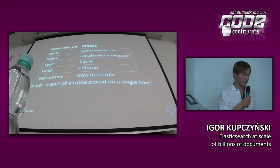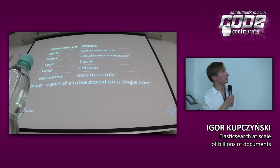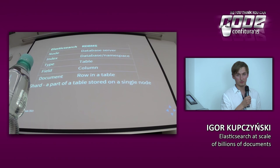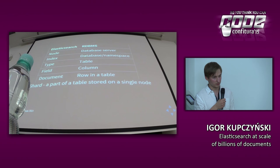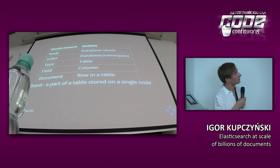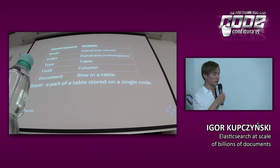Here is a comparison between Elasticsearch and classical database terminology — not a one-to-one mapping, just to give the basic idea. Elasticsearch nodes can be seen as a database server; an index as a single database or namespace; a type as a table, which stores rows, which in Elasticsearch are documents; and document fields are like columns. Importantly, a shard is a part of the table stored on a single node, and it is the unit of scaling — so if an index has 10 shards, you can scale it out to up to 10 nodes.